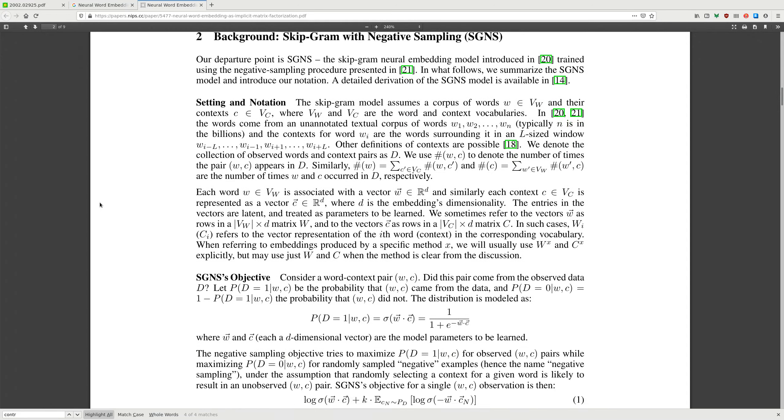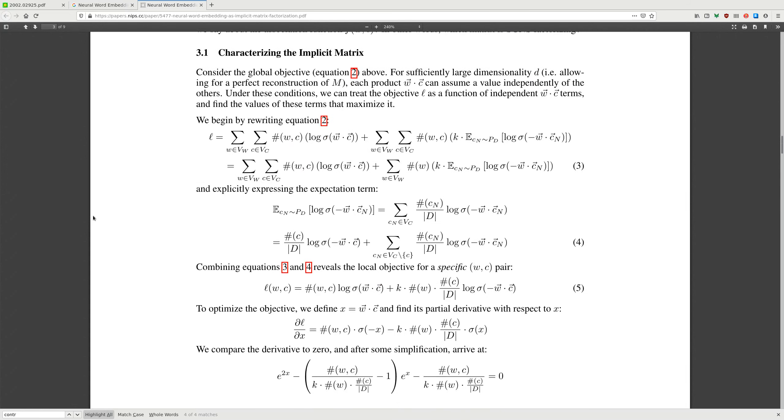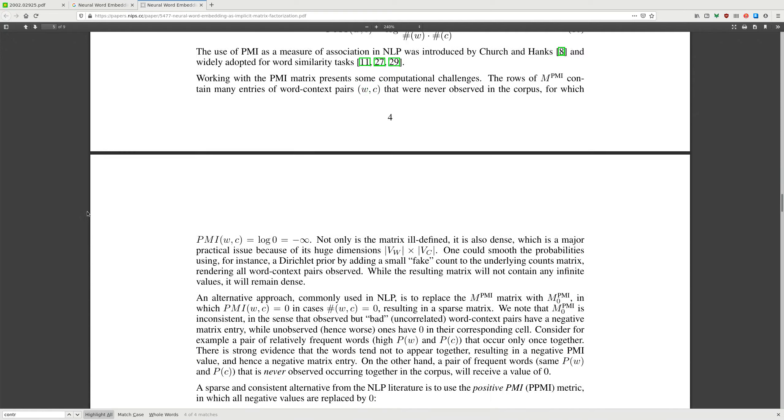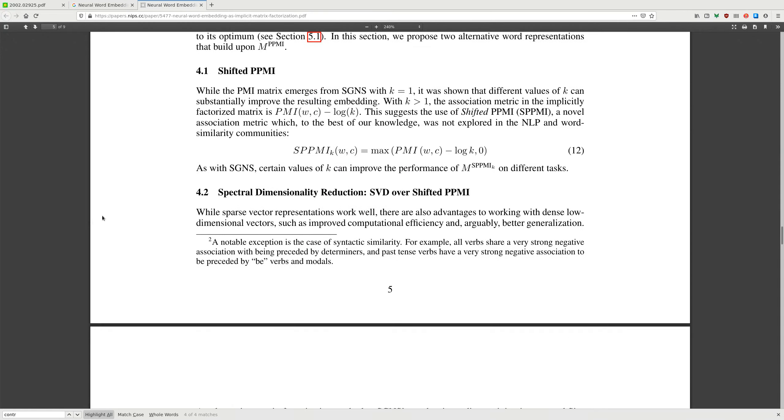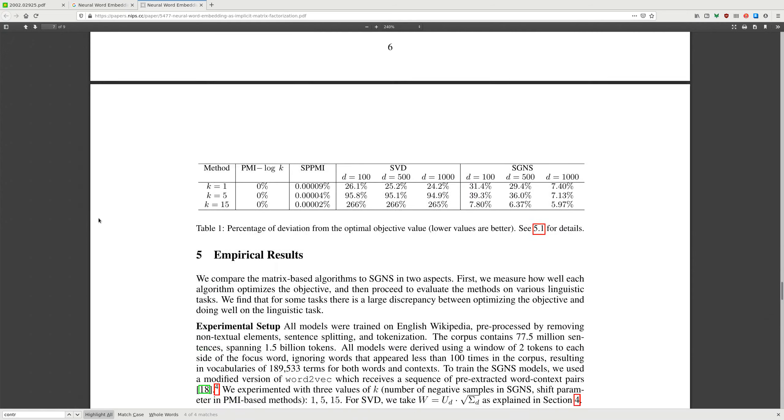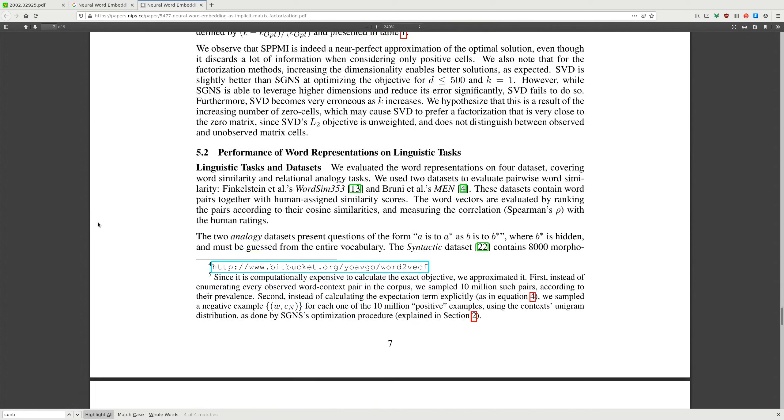Background: skip-gram with negative sampling, SGNS as implicit matrix factorization, characterizing the implicit matrix, weighted factorization, pointwise mutual information, alternative shifted PPMI, spectral SVD, symmetric SVD, SVD versus SGNS, empirical results.